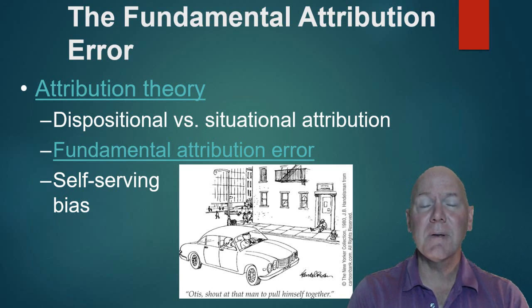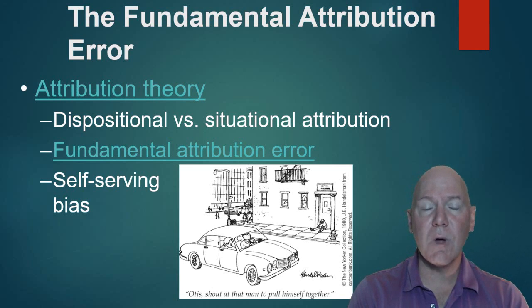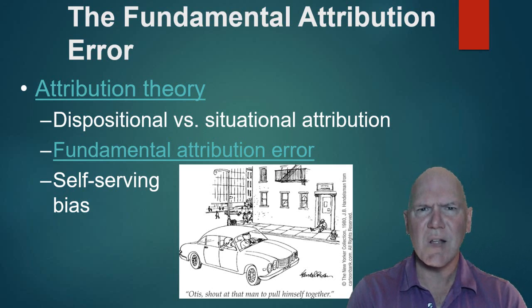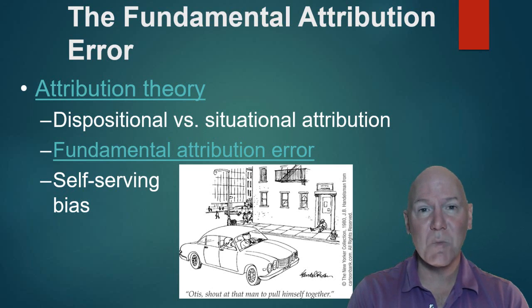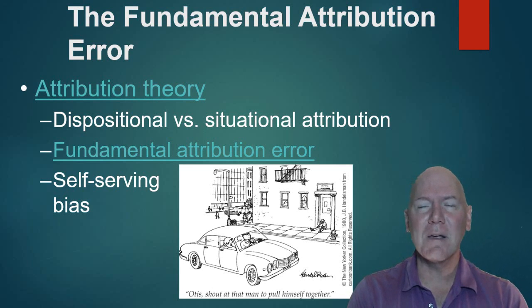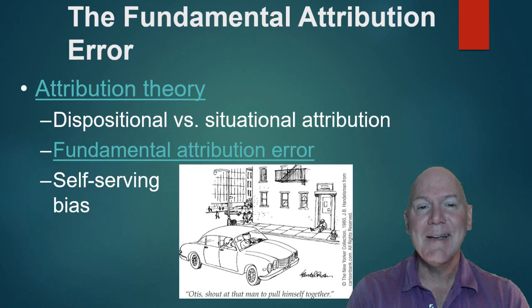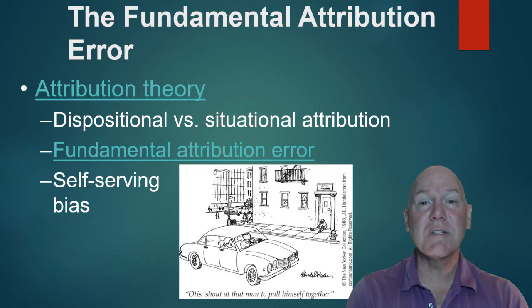We tend to give dispositional explanations to other people's behavior, especially when it's bad. For example, when somebody cuts you off in traffic, you think that person is such a jerk. But when you've cut someone else off, you think, 'I had a lot on my mind, I wasn't paying attention.' So for the other person you give a dispositional explanation, and for yourself you give a situational attribution.